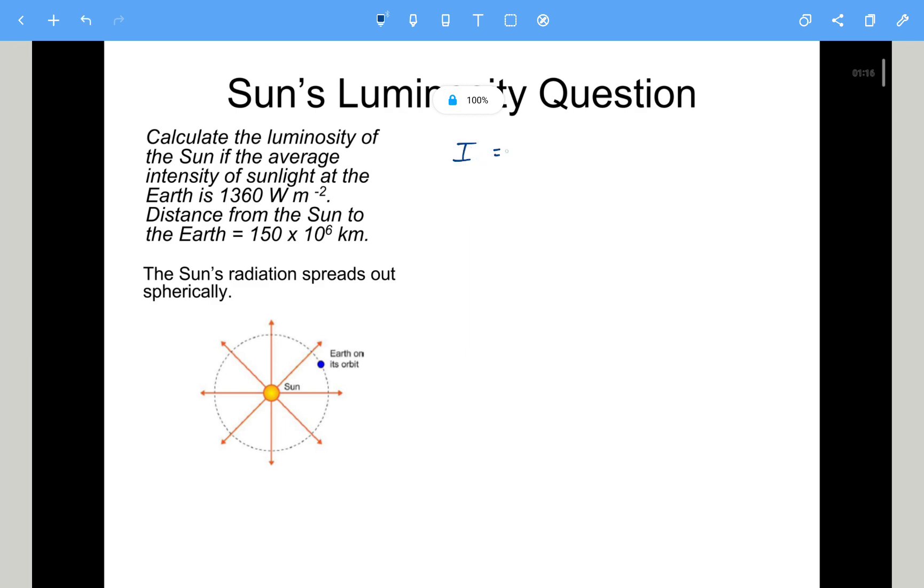Right, so intensity is power per unit area. So we know the intensity is 1,360. And what we need to do to get the power output is to find the area. And it's the area of this sphere. So what we need is the area of this sphere that's coming out. So the area of the sphere is given by 4 pi r squared.